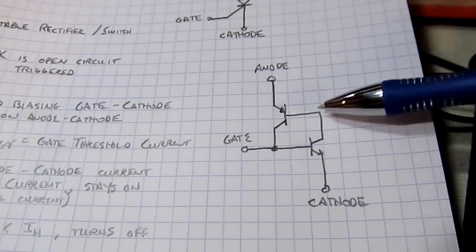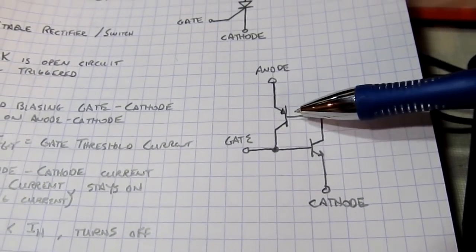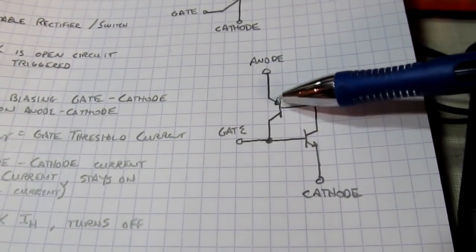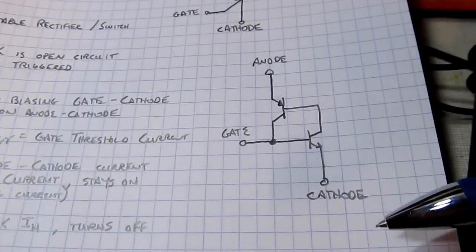If this transistor is turned on, there's no current flowing here, which means there's no current flowing out of the base of this PNP, so he's off as well. So it looks like an open circuit from anode-to-cathode.